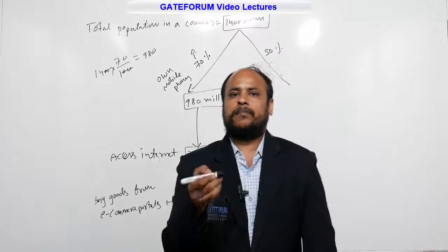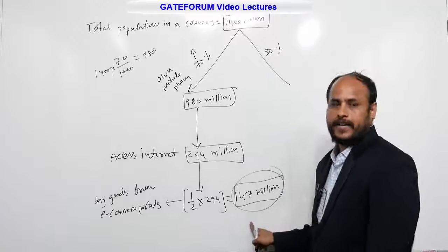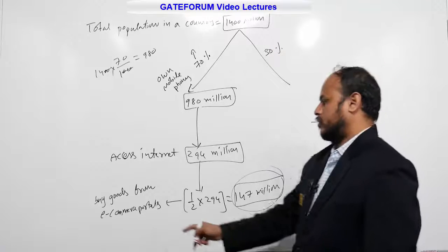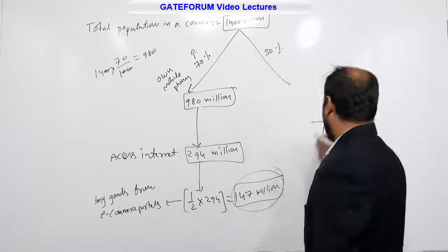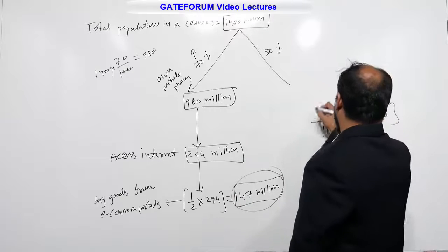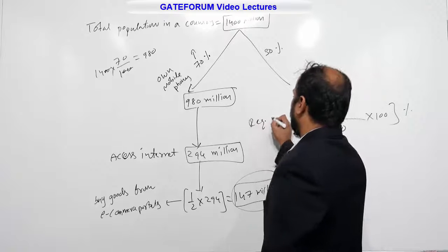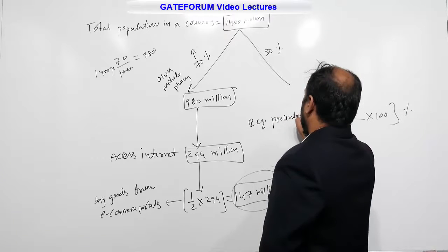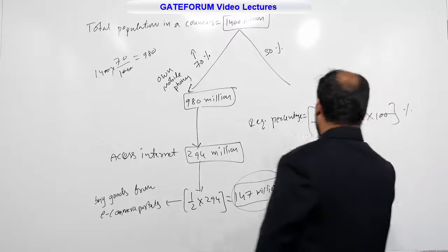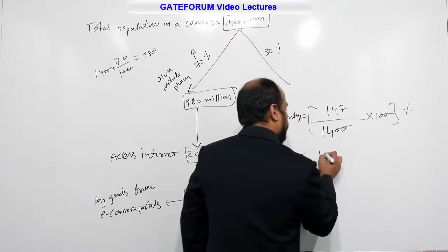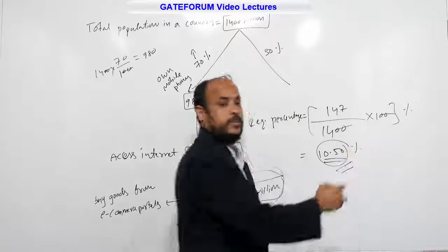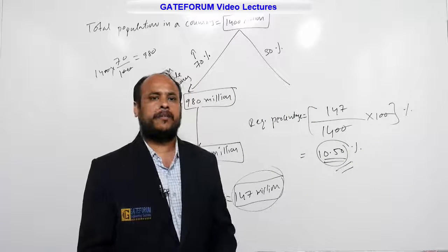The question asks: what is the percentage of these buyers in the country? Total population is 1400 million, and buyers from e-commerce portals are 147 million. So, (147/1400) × 100 — two zeros cancel — gives 147/14, which equals 10.50%. The right option is A, 10.50%. That is the required percentage.